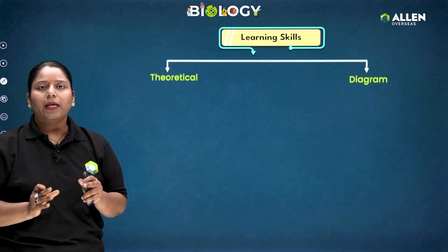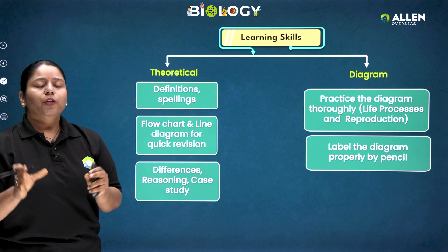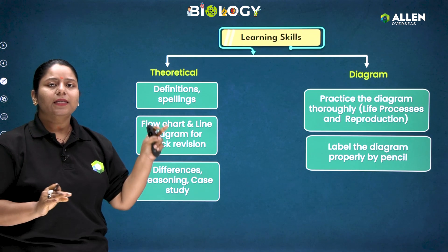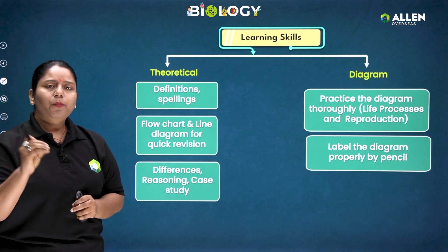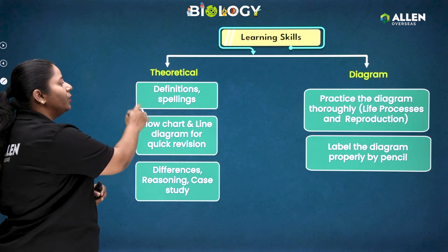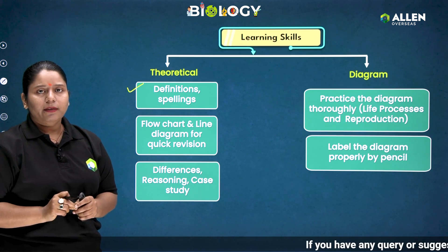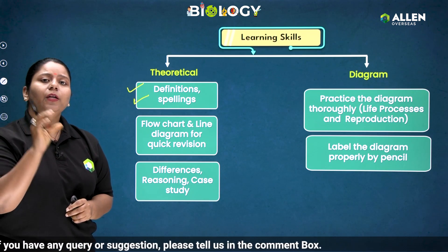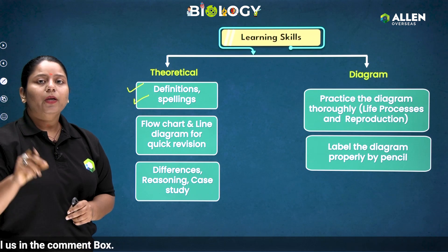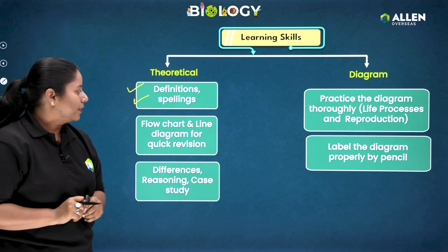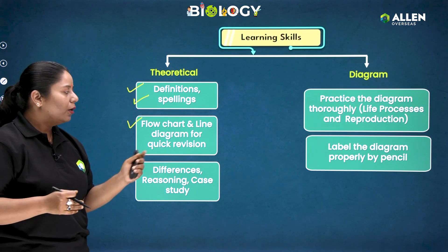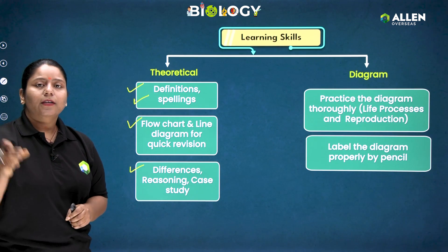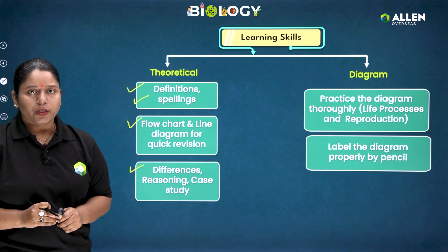Now let's proceed with the learning skills for biology. Biology includes two major aspects: the theoretical part and diagrams. For the theoretical part, you have to be very thorough with definitions and terminologies, because spelling mistakes are not allowed in our exam. For quick revision, use a flowchart or line diagram method, and be thorough with difference-based questions, assertion-reason questions, and case study-based questions.